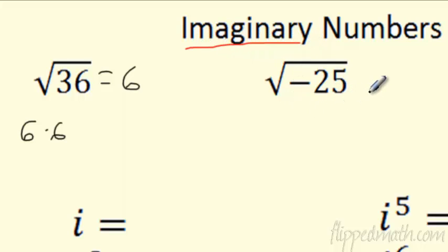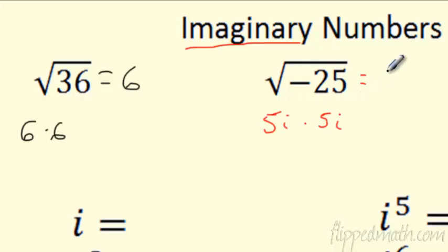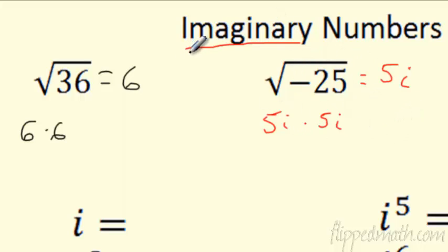What number times itself is negative 25? Well, we know it's not 5 times 5 because that's positive. It's not negative 5 times negative 5 because that would be positive 25. It's actually 5i times 5i. So the square root of negative 25 is 5i. These are imaginary numbers — not real numbers, but sometimes they're useful.